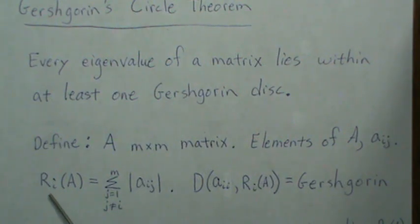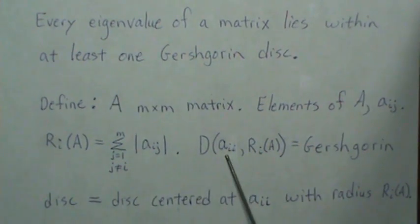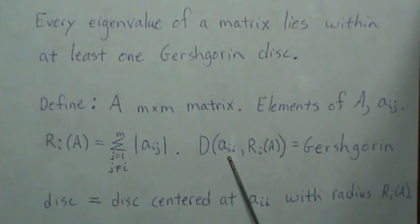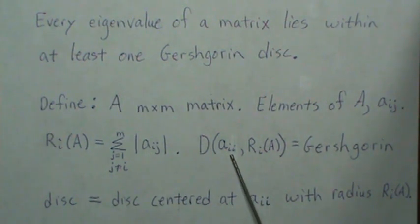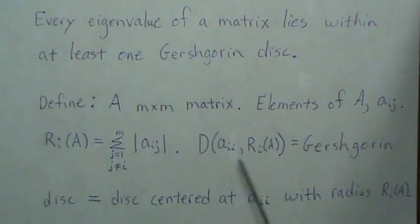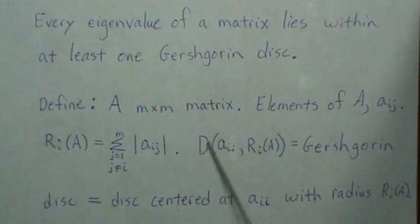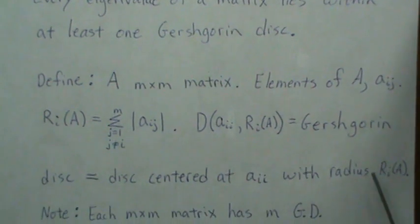And then the Gershgorin disk is going to be this: it's a circle or a disk centered at the diagonal element of row i, and it has a radius of this right here, the row total. So this disk, it's a circle, and that's called a Gershgorin disk.